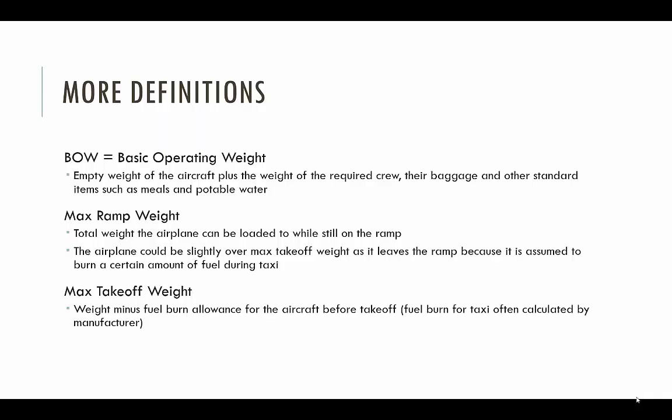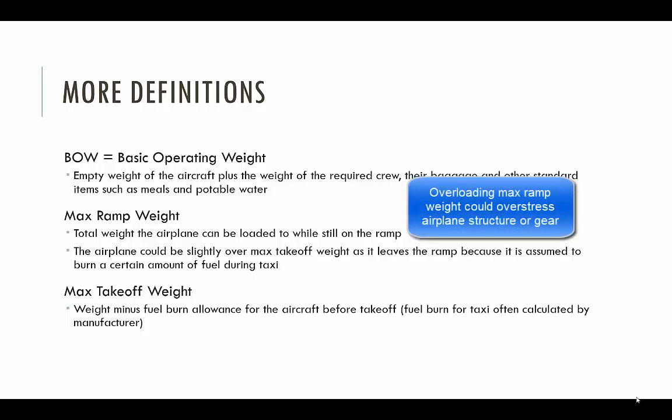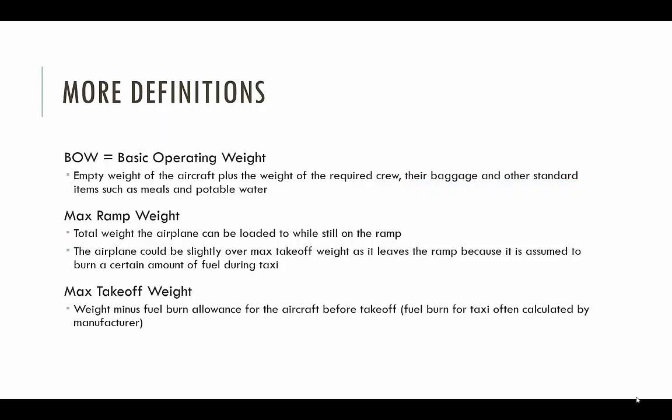Maximum ramp weight is the total weight the airplane can be loaded to while still on the ramp. The airplane could be slightly over max takeoff weight as it leaves the ramp because it will burn fuel during taxi. Maximum takeoff weight is the ramp weight minus the fuel burn allowance before takeoff. Taxi fuel is calculated by the manufacturer, so you subtract that from max ramp weight to find your maximum takeoff weight.